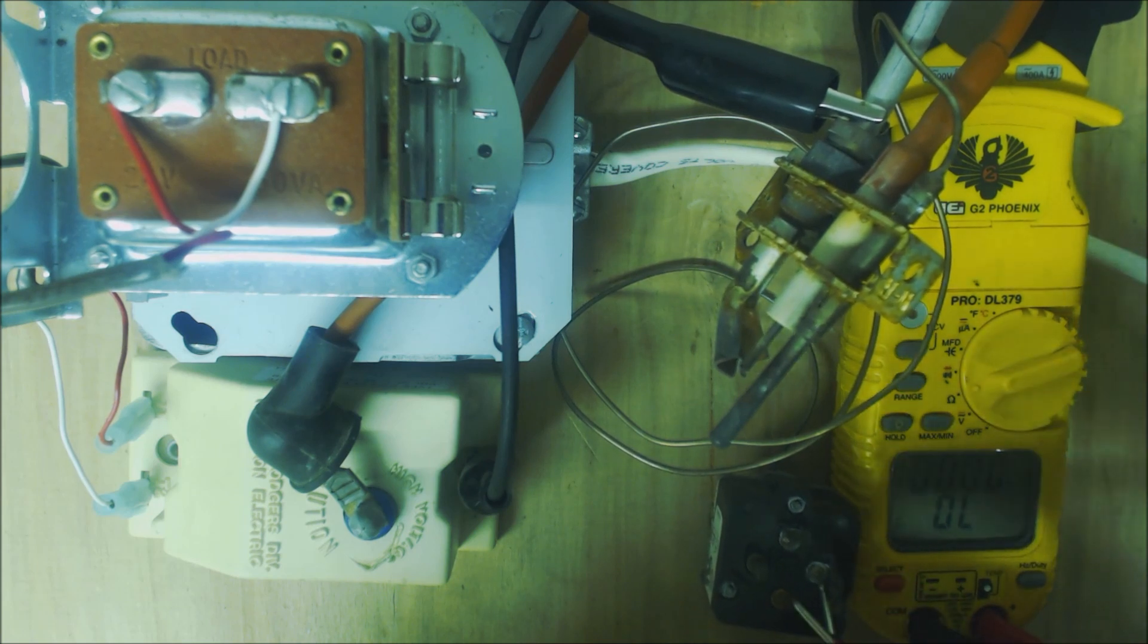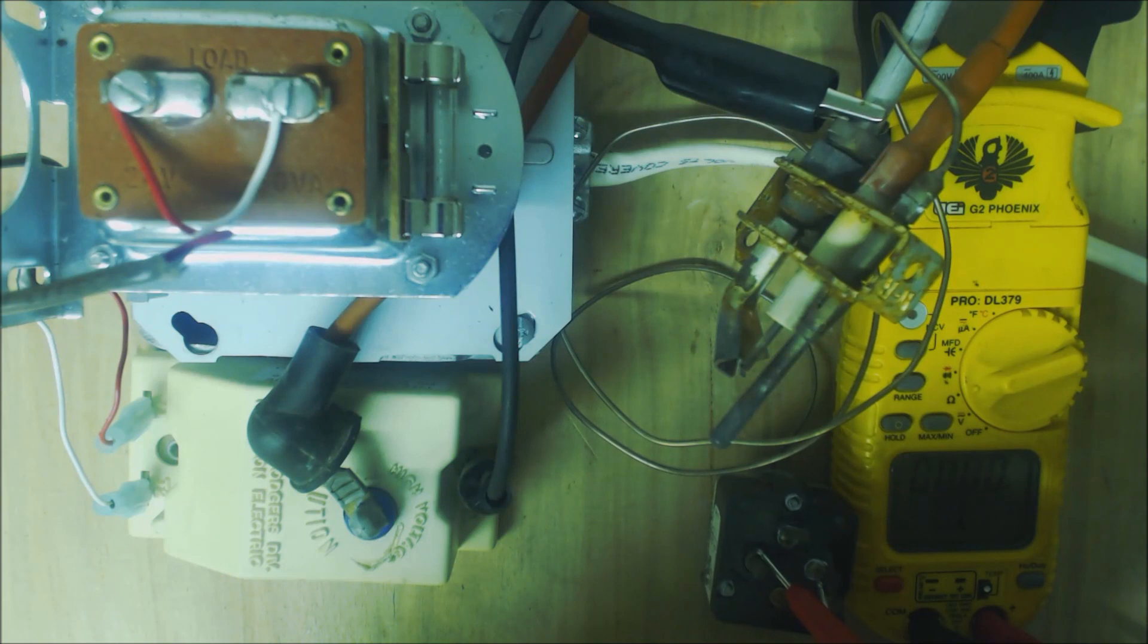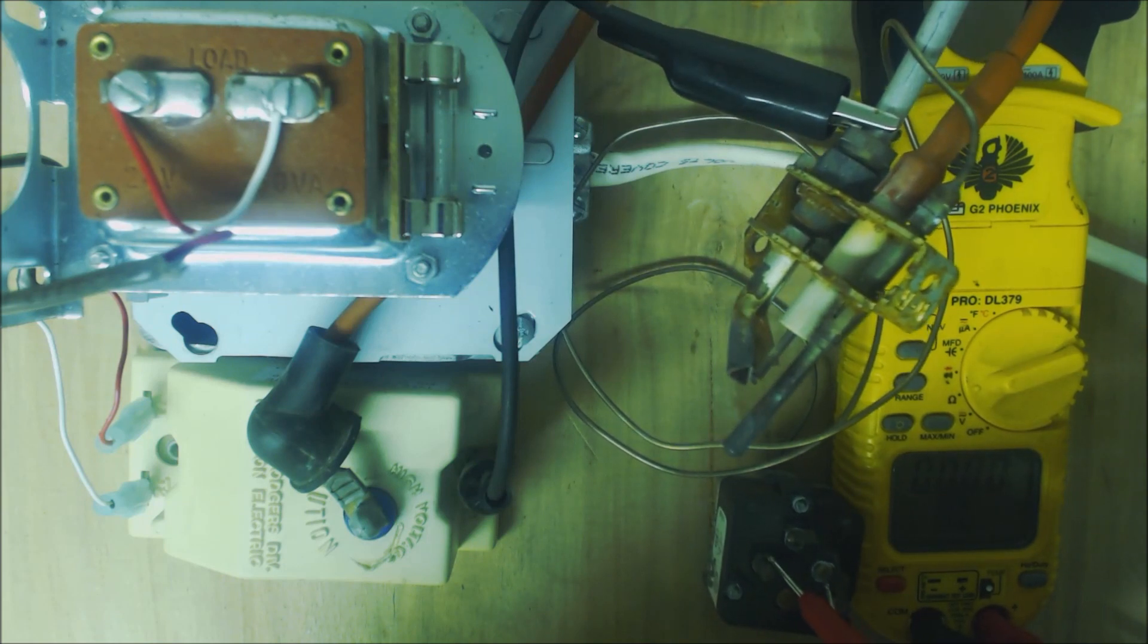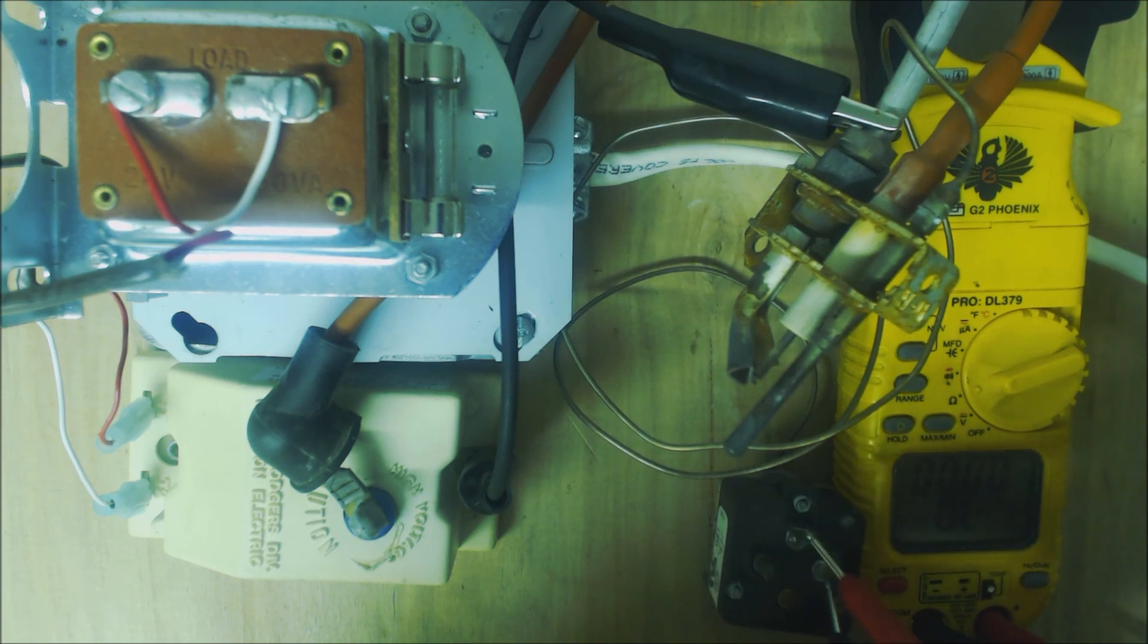Now we look between two and four and we have mega ohms - it's OL, over limit. So this is the normally open set of contacts, and this is the normally closed set.